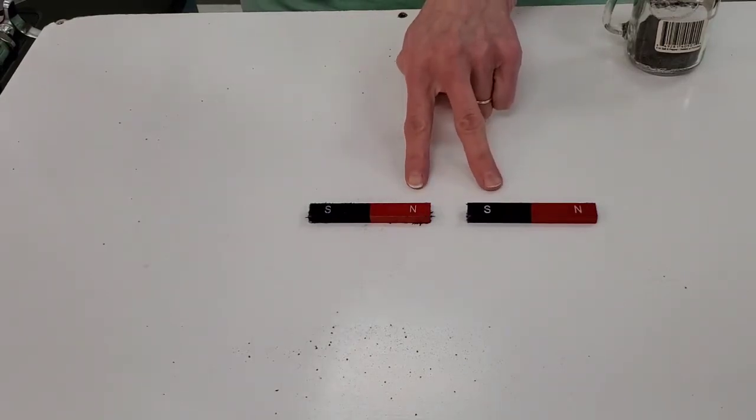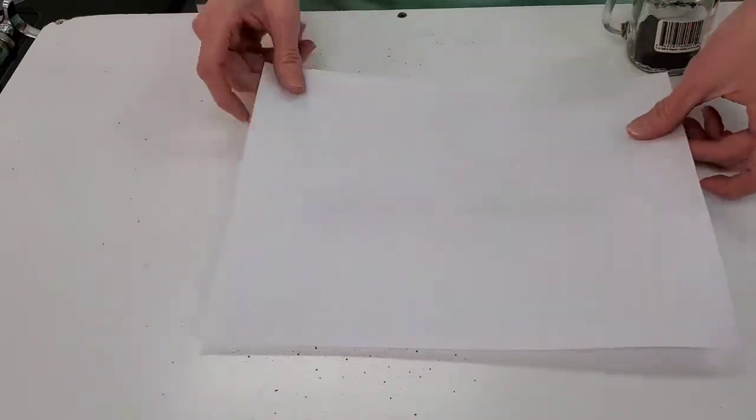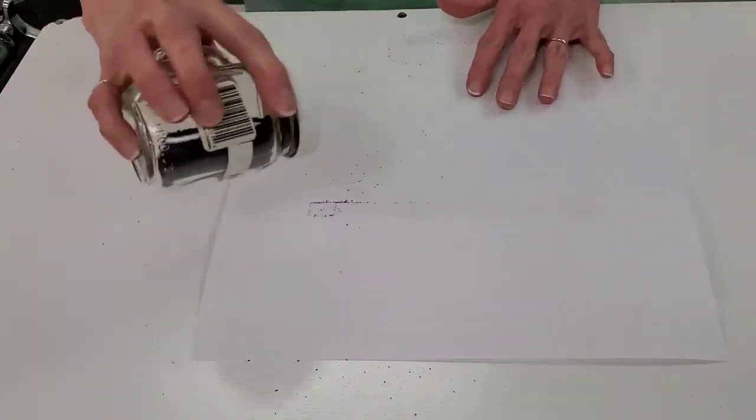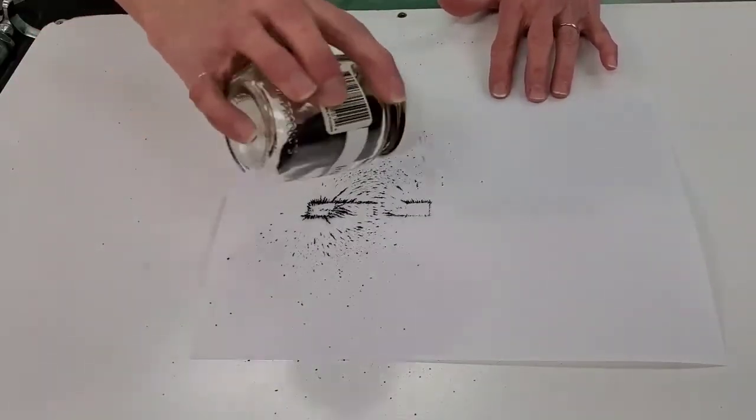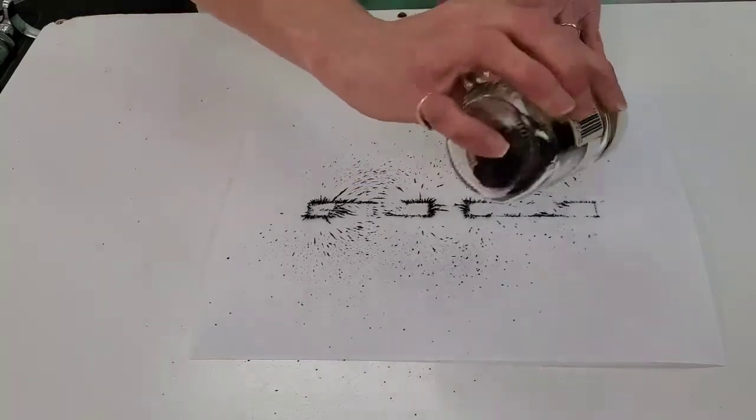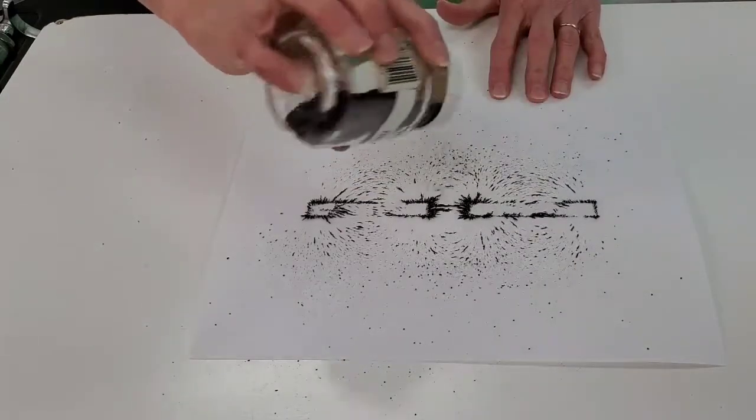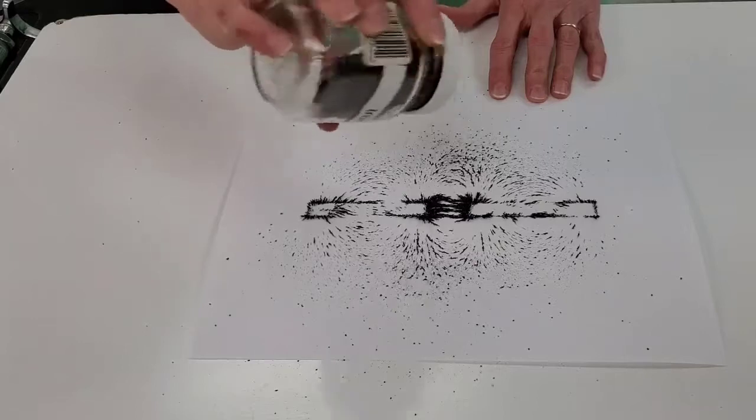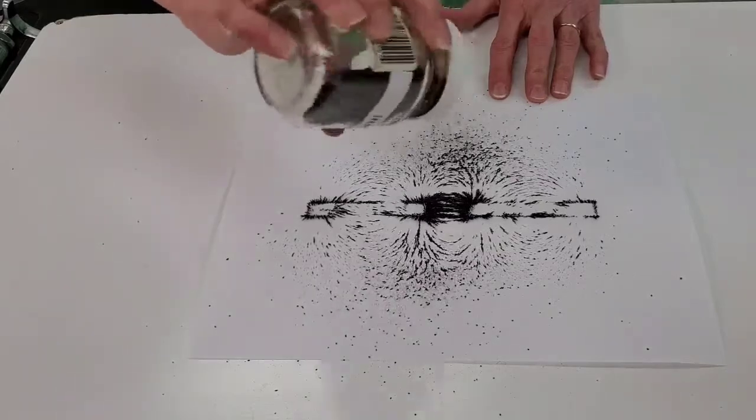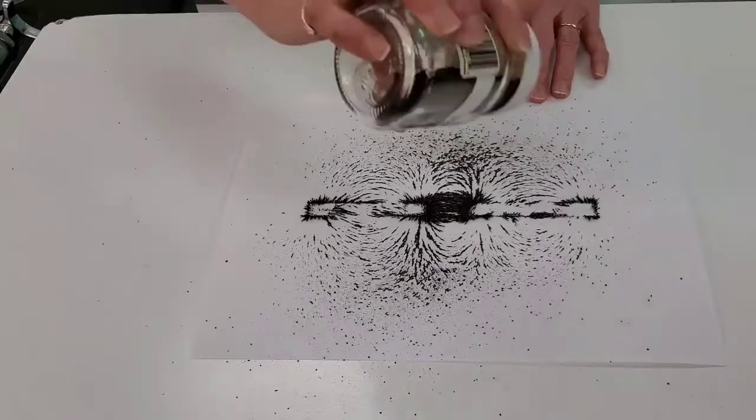Now let's look at the iron filings when you have two like poles or opposite poles facing each other. Poles aren't touching. The magnets are not touching underneath. What happens to the magnetic field lines when opposite poles are placed next to each other?